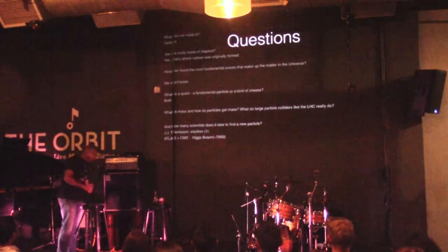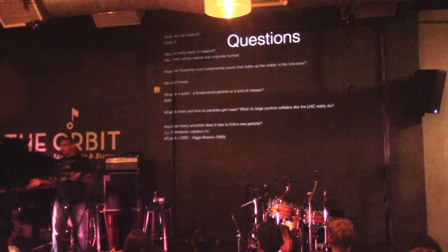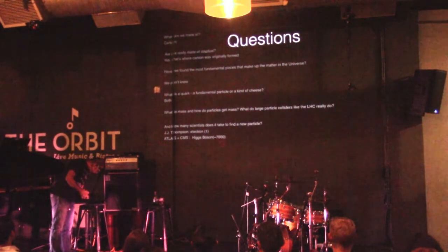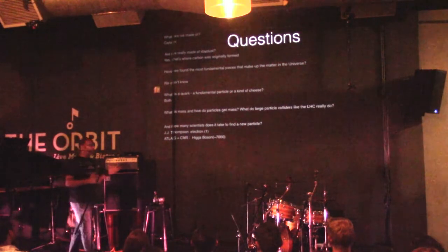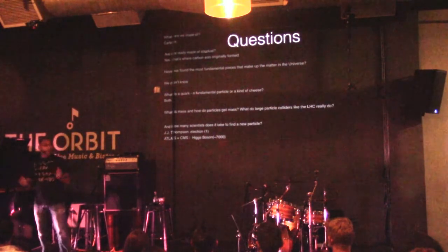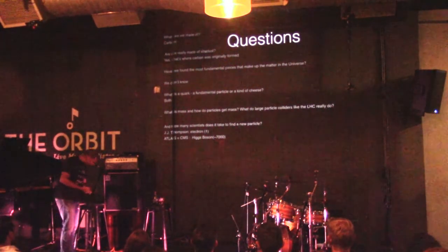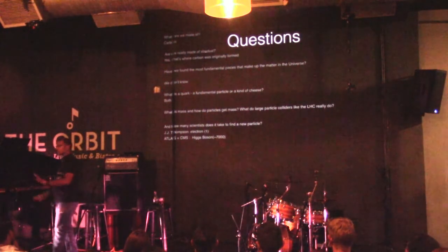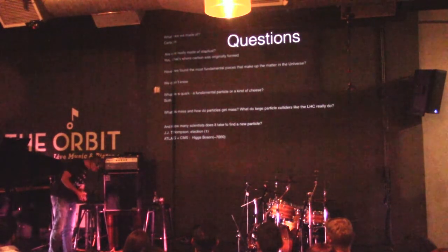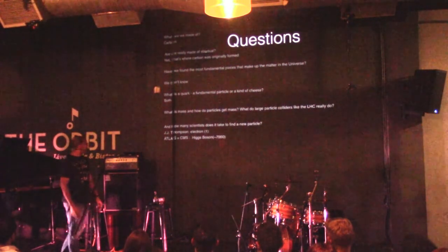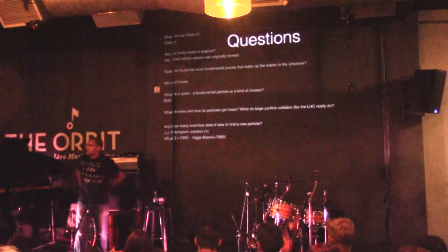Let's go through the questions quickly: what are we made of? Mostly carbon. Are we really made of stardust? Yes — that's where carbon is formed; otherwise everything would be hydrogen. Have we found the most fundamental pieces? We don't know. What is a quark? A fundamental particle or a type of cheese — both. How many scientists does it take to find a new particle? For the electron it was one; for the Higgs boson it was approximately 7,000. Thank you all for coming — I am humbled by the turnout and I hope you learned something.